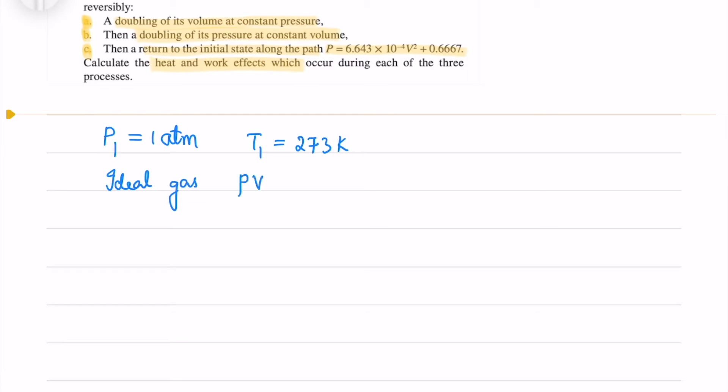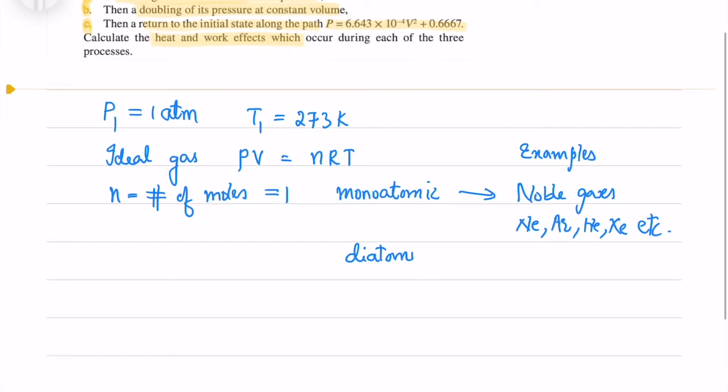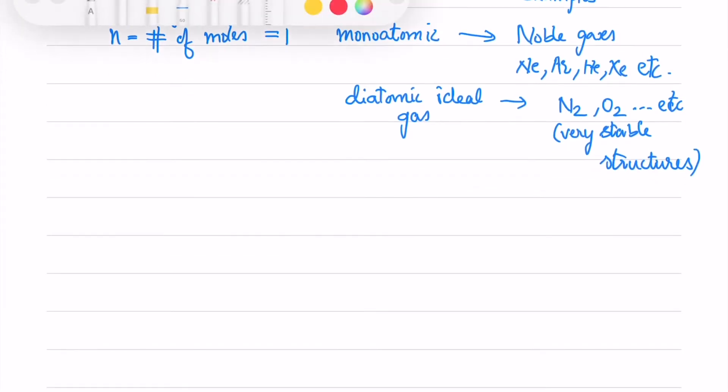For an ideal gas we know PV equals to NRT, N equals to number of moles that is 1 here and the monoatomic gas means it's a noble gas like Neon, Argon, Helium, Xenon etc. Diatomic ideal gas means we should have something like Nitrogen and Oxygen which have high bond energy hence they are very stable structures so they behave as ideal gases.